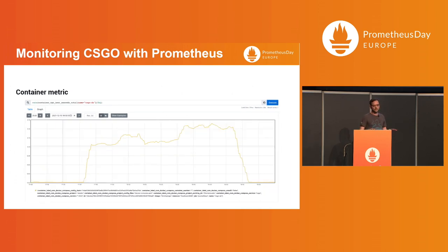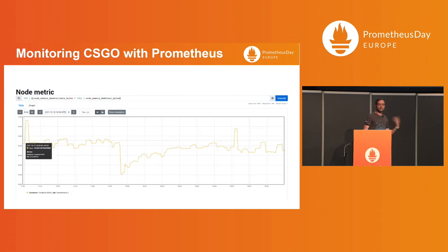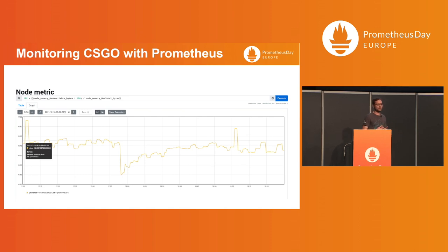In the case of the node metrics, it's more difficult to see. For example, for the memory, it's difficult to see anything because the other containers on the host are consuming more memory than the game server. On the other hand, for the CPU it's more clear — here you can see when the game starts and when it ends. A common mistake when you don't know how many resources your application uses is creating an instance with more resources than you need. To take care of this, you can check the overview of the resources you are using and resize it accordingly.